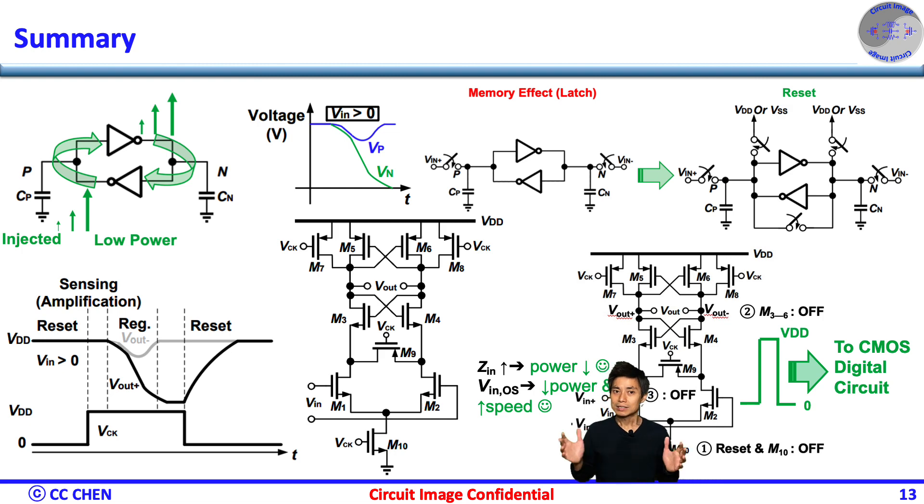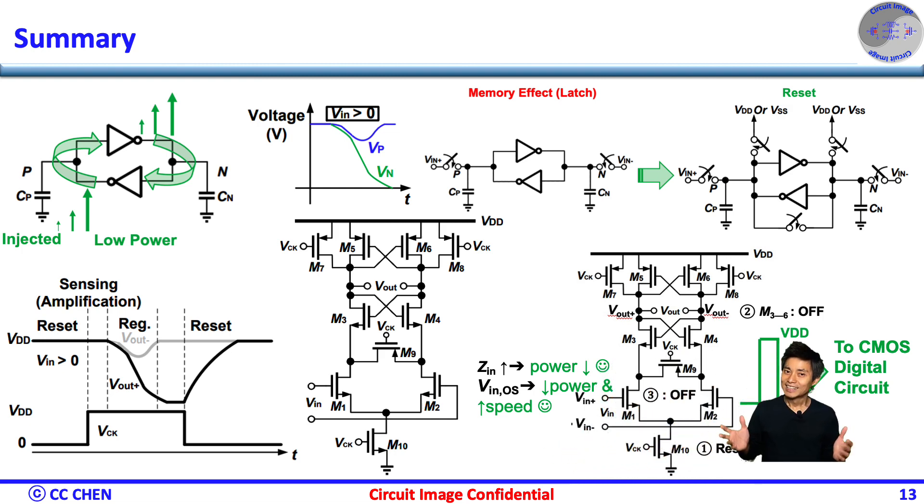Second, the output swing of the strong-arm latch is rail-to-rail, which makes it compatible with the following digital CMOS logic also. So, it's commonly used in ADC, memory, SerDes, etc.